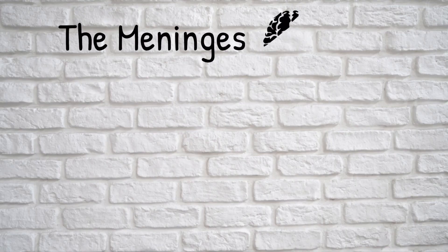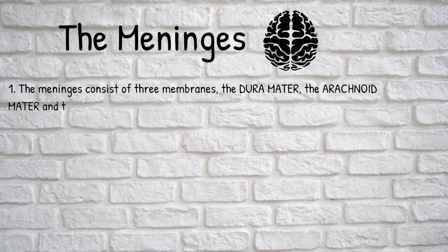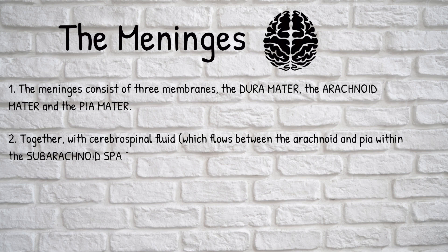First we need to talk about the meninges. These are the three membrane layers that surround the brain and spinal cord. There's the outer dura mater, the arachnoid mater, and the inner pia mater. Together with the cerebrospinal fluid, or CSF, they serve to protect the brain and spinal cord.